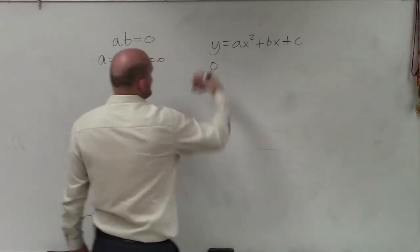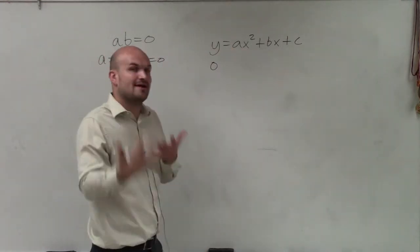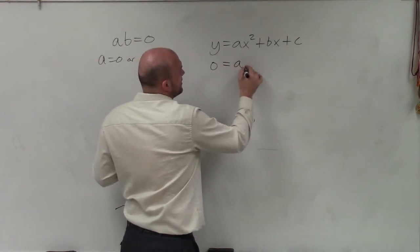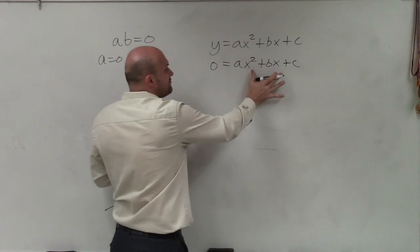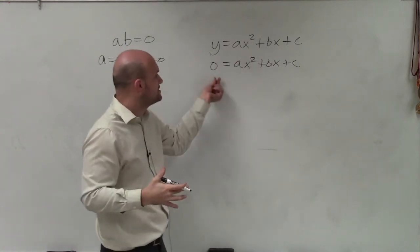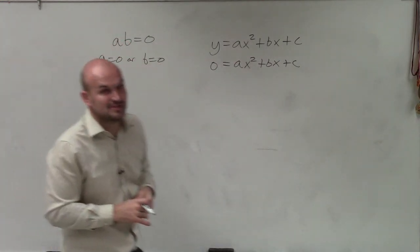So what I do is I change my y my f of x whatever my function notation would be and therefore I'm going to now use this to factor this so it's a product equal to zero then I can apply my zero product property.